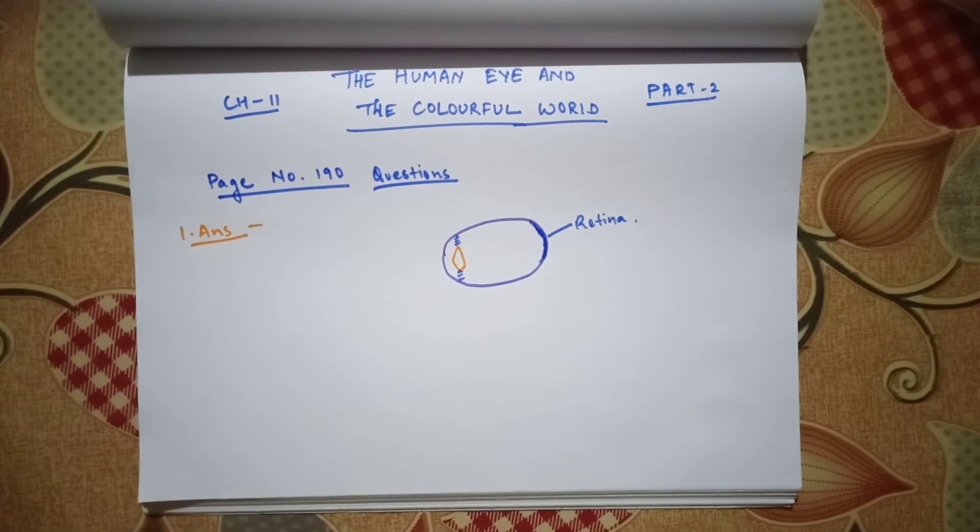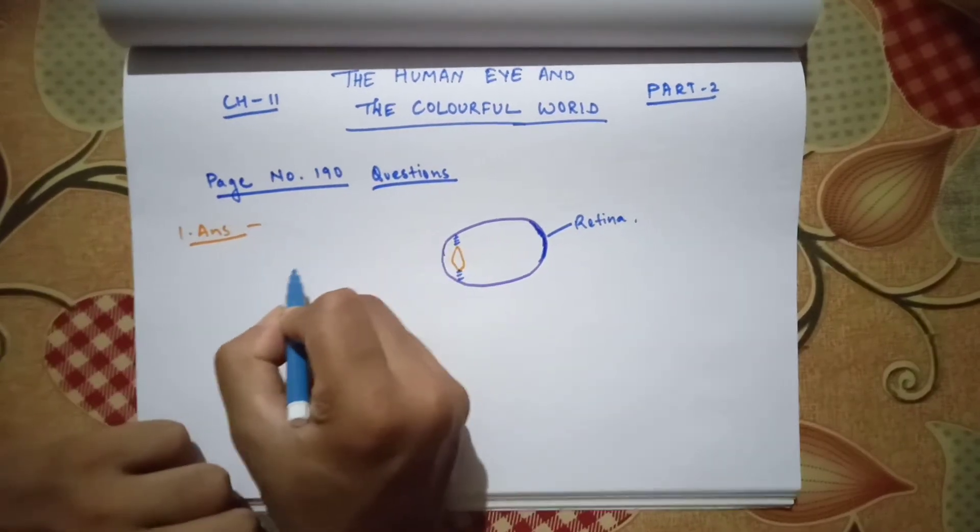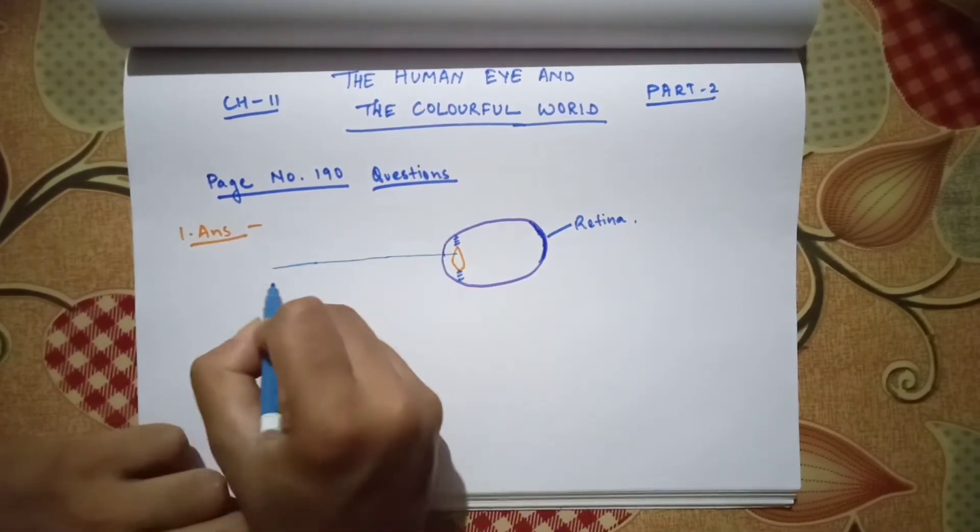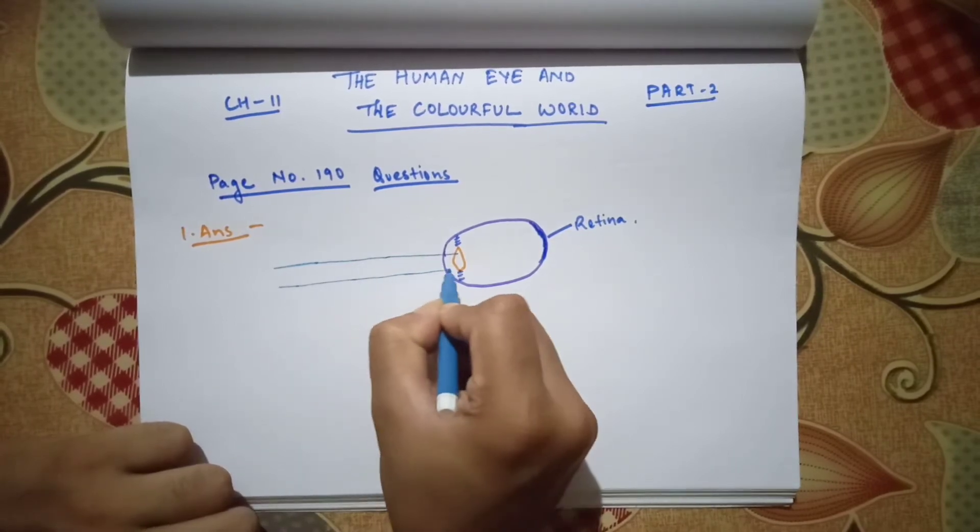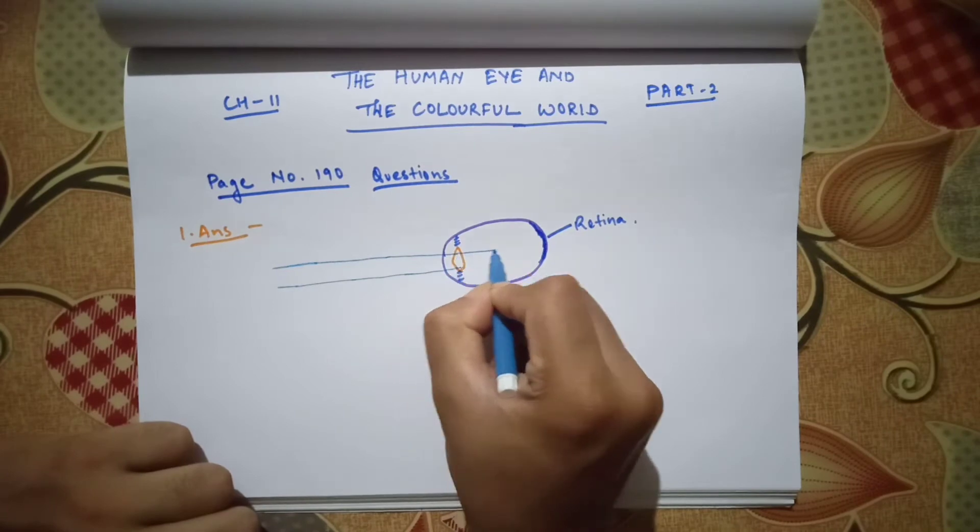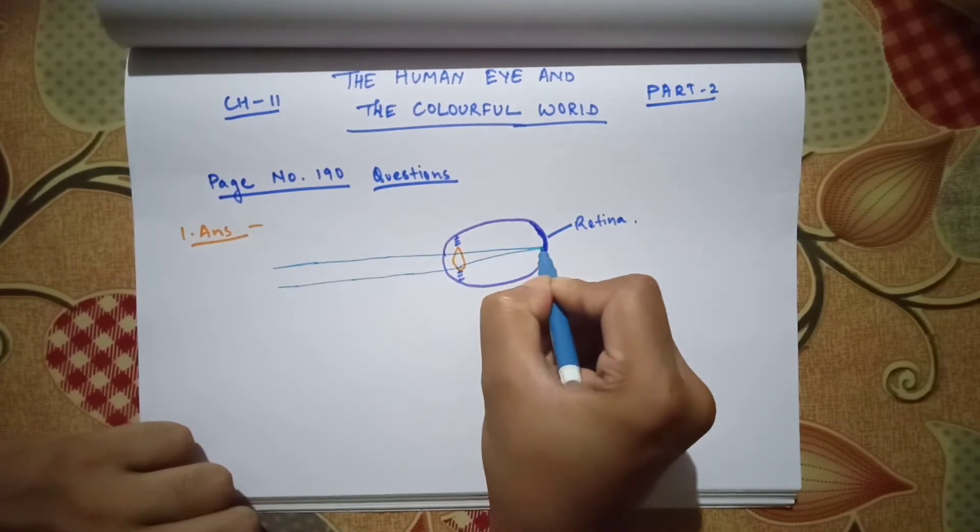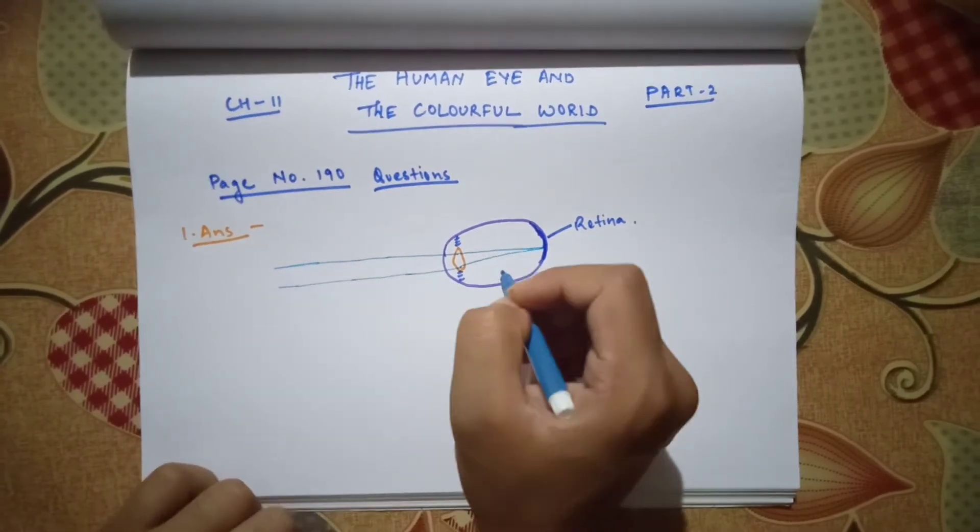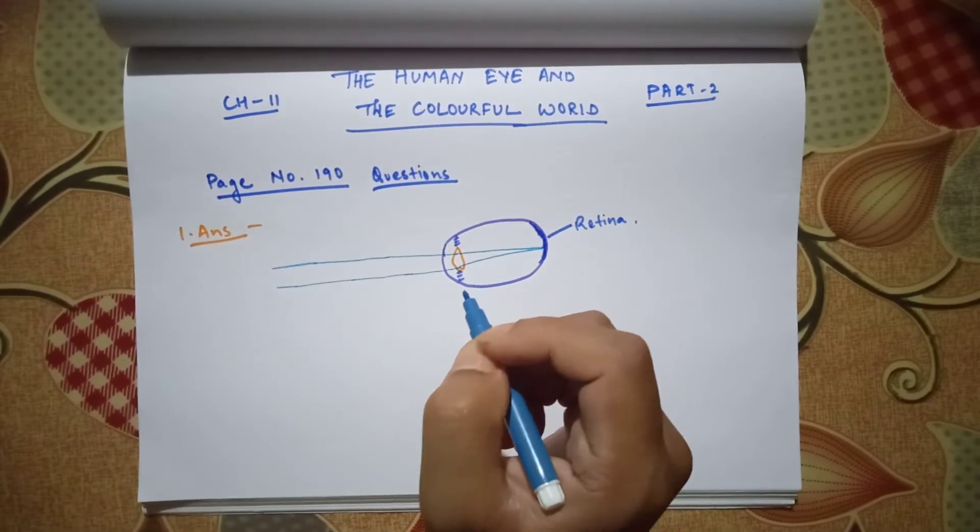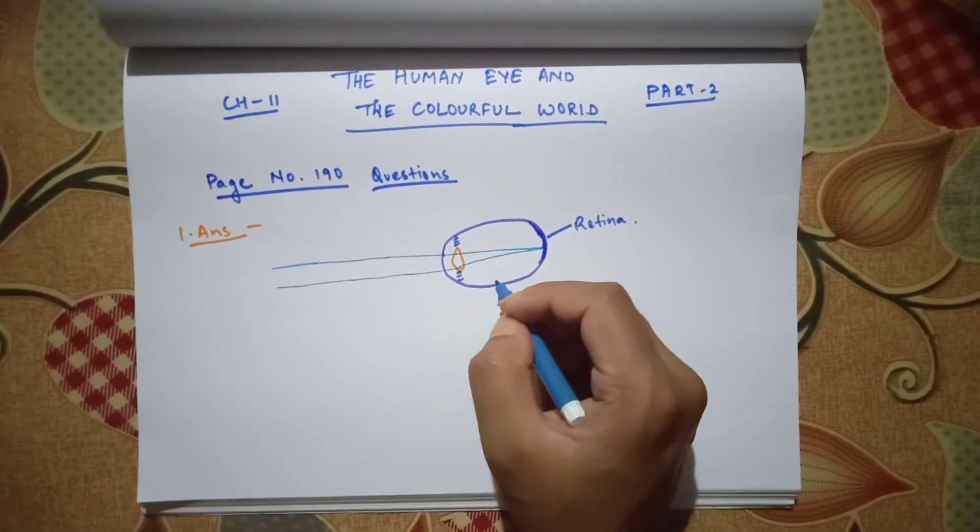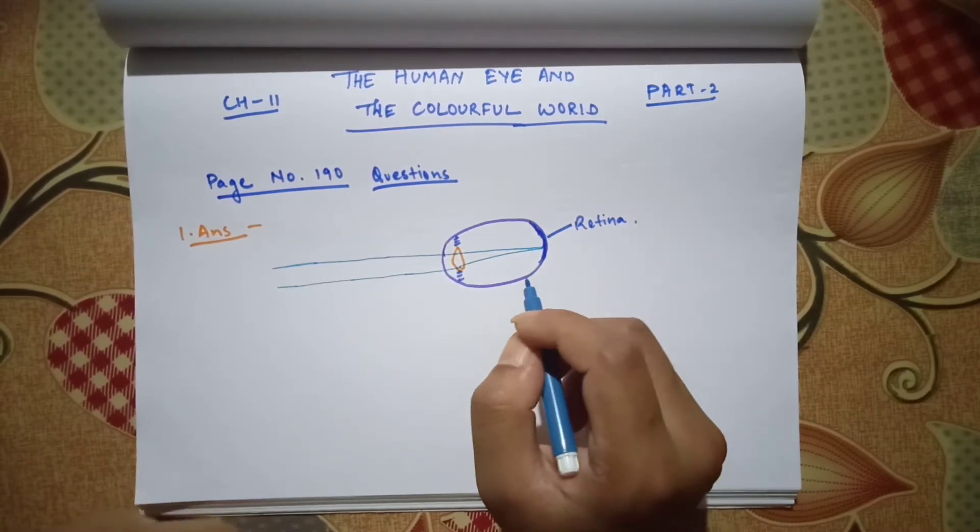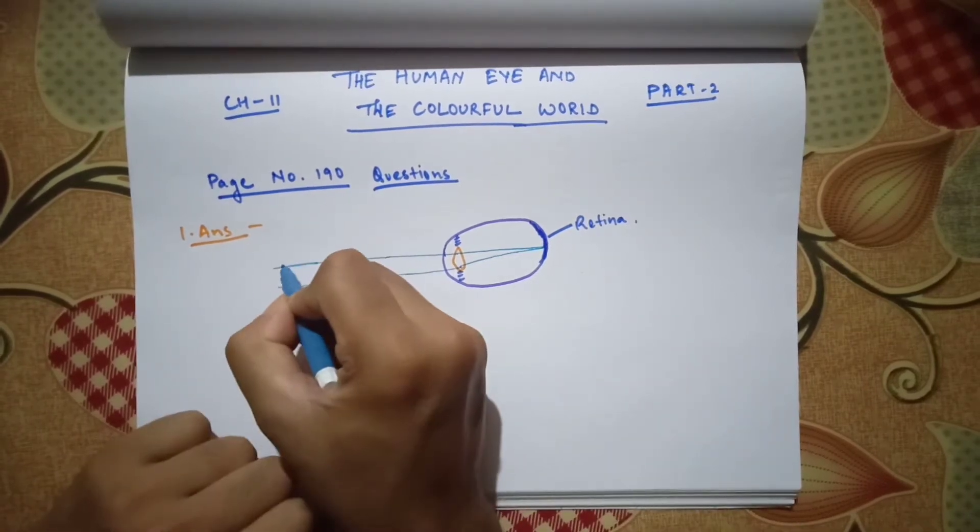Now suppose a ray of light is coming this way, the image is formed in the retina. That is why we are able to see each and everything. Now suppose, you need to know that our eye is capable of viewing each and everything, far or near. It doesn't matter if the object is far away from you or near to you, you can see both objects at the same time.